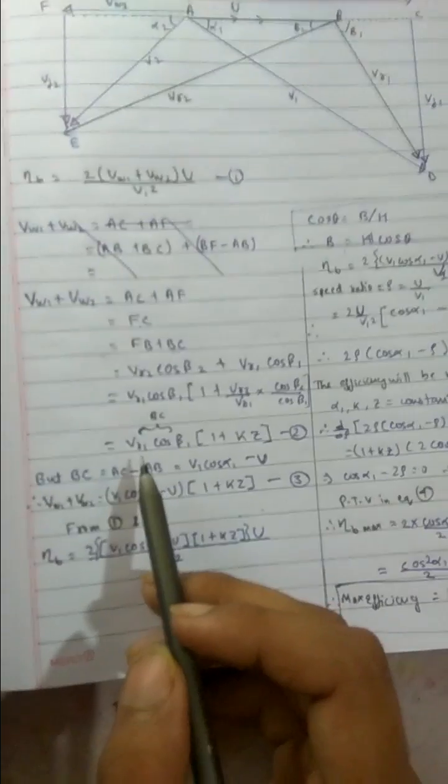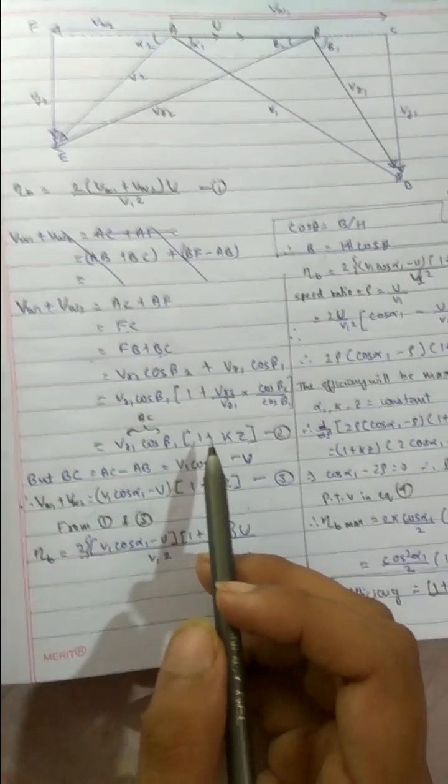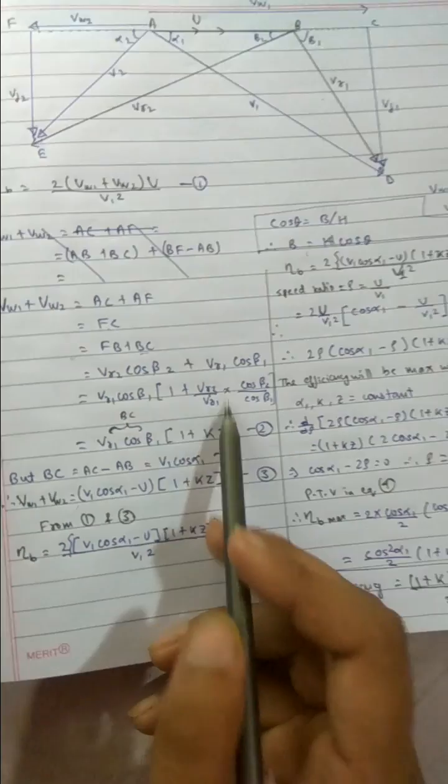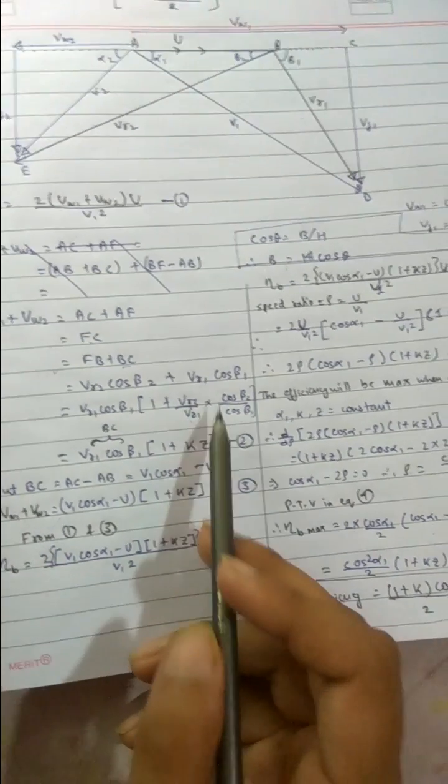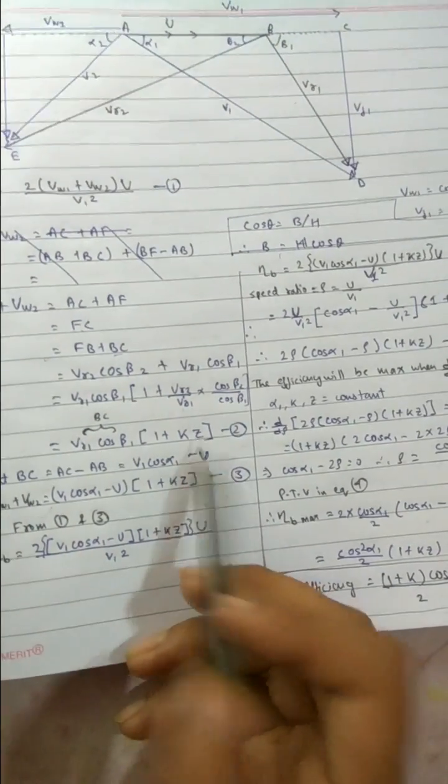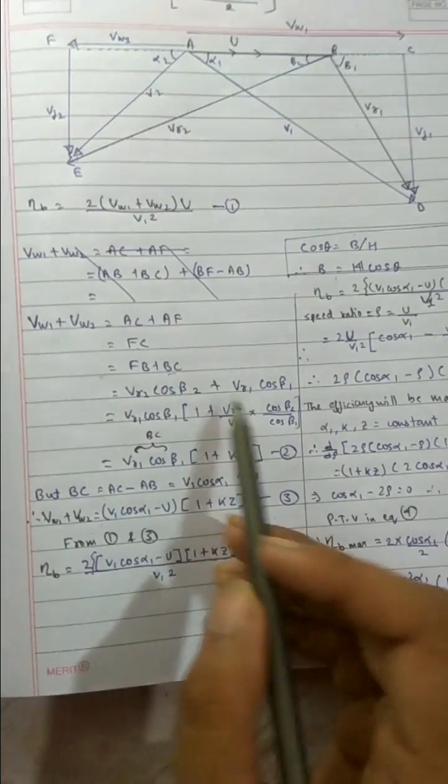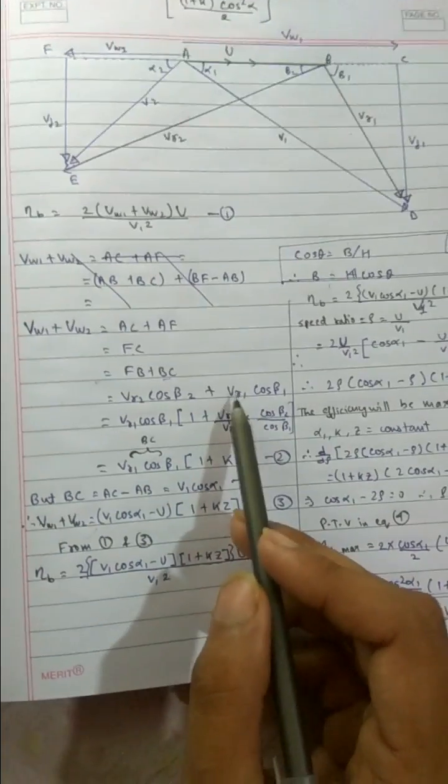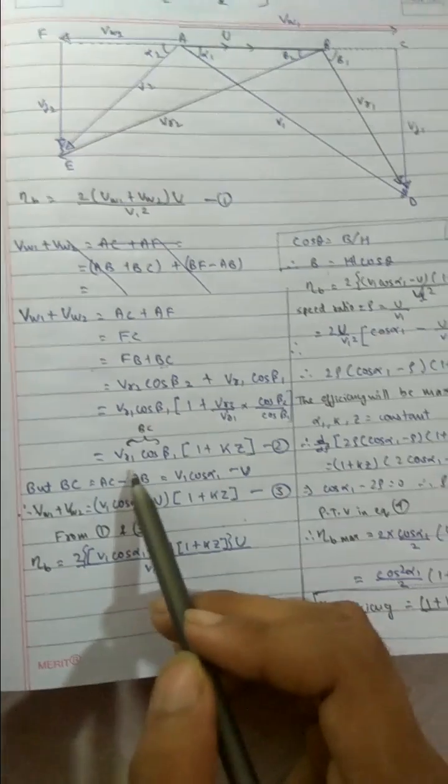So our expression comes as VR1 cos beta 1. And we have given this some name. The loss, the change in velocity is K. Cos beta 2 by cos beta 1 is Z. Now you can see BC value we got VR1 cos beta 1, same VR1 cos beta 1.